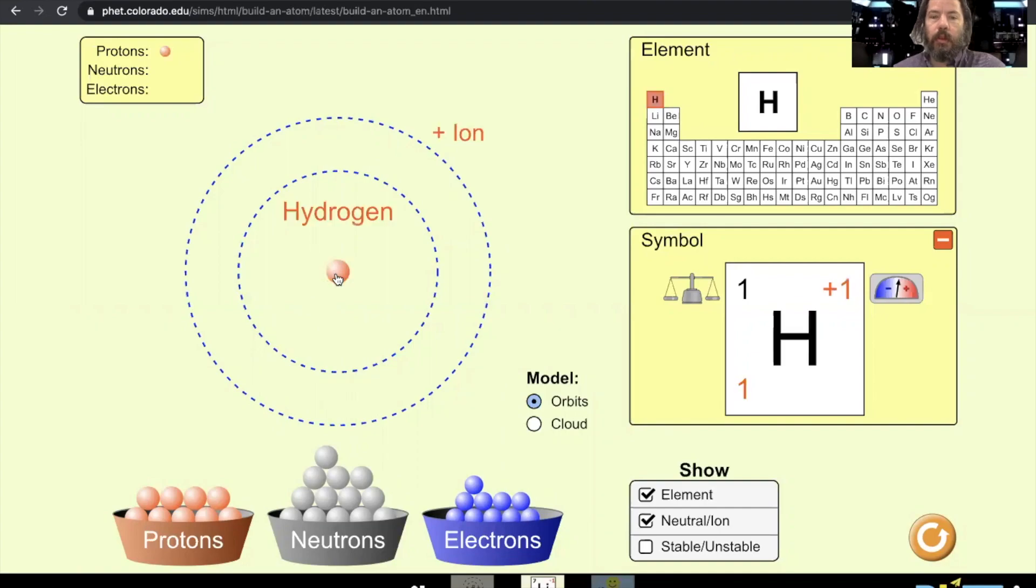So first thing, when we put a proton in the middle of an atom, that proton determines what the element is. So we got hydrogen.